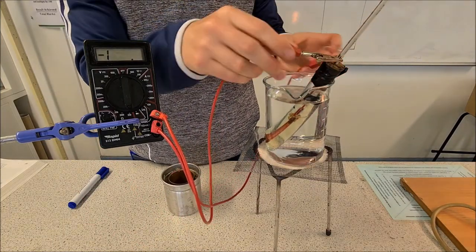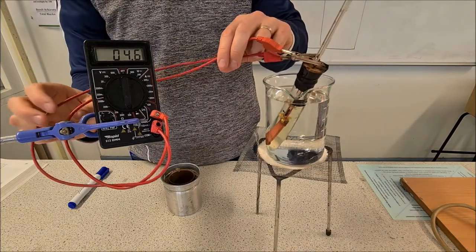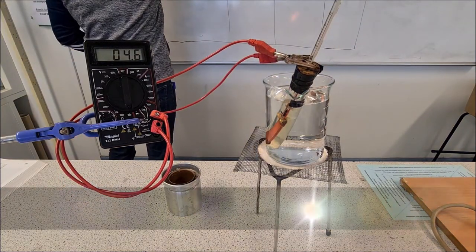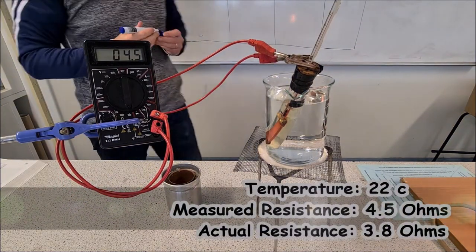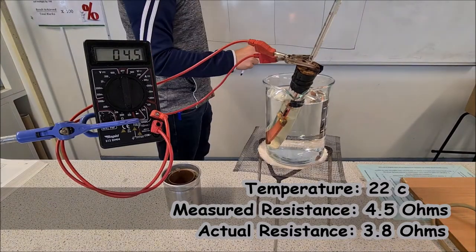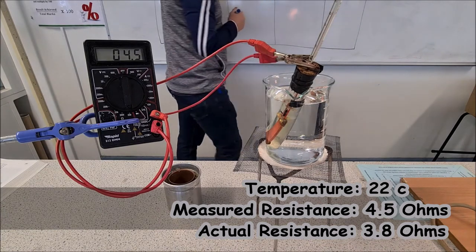Our initial temperature is 22 degrees and the measured resistance is 4.5 ohms. What's the actual resistance? 3.8 ohms.